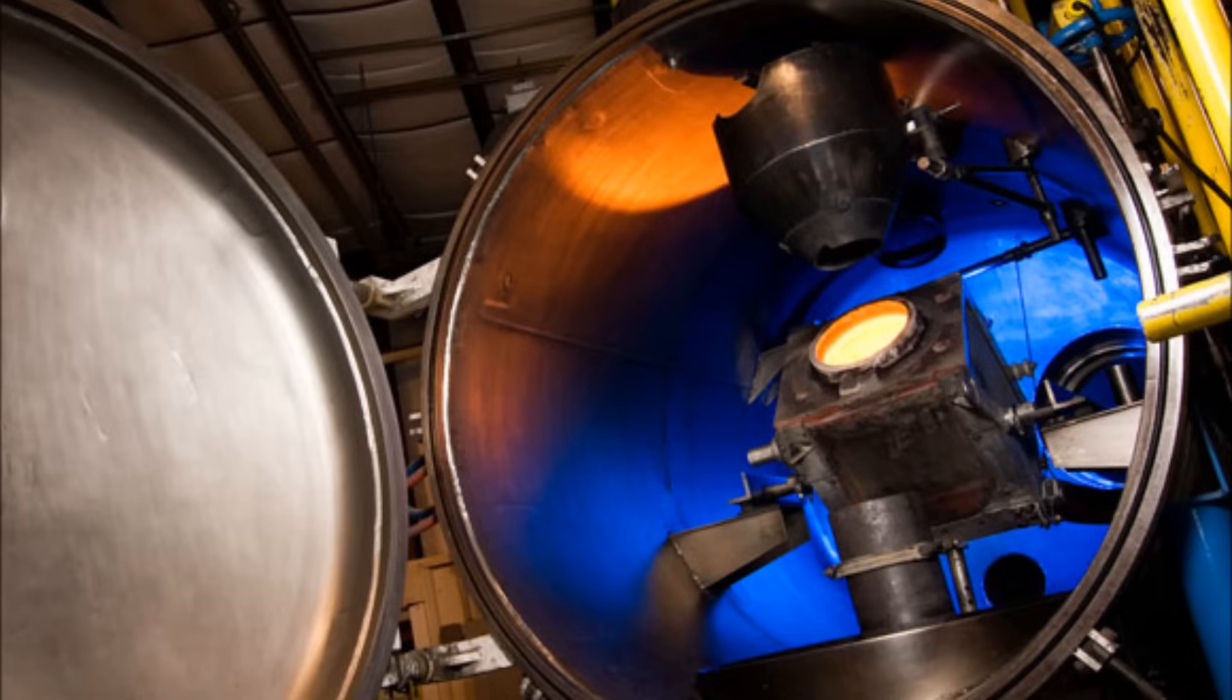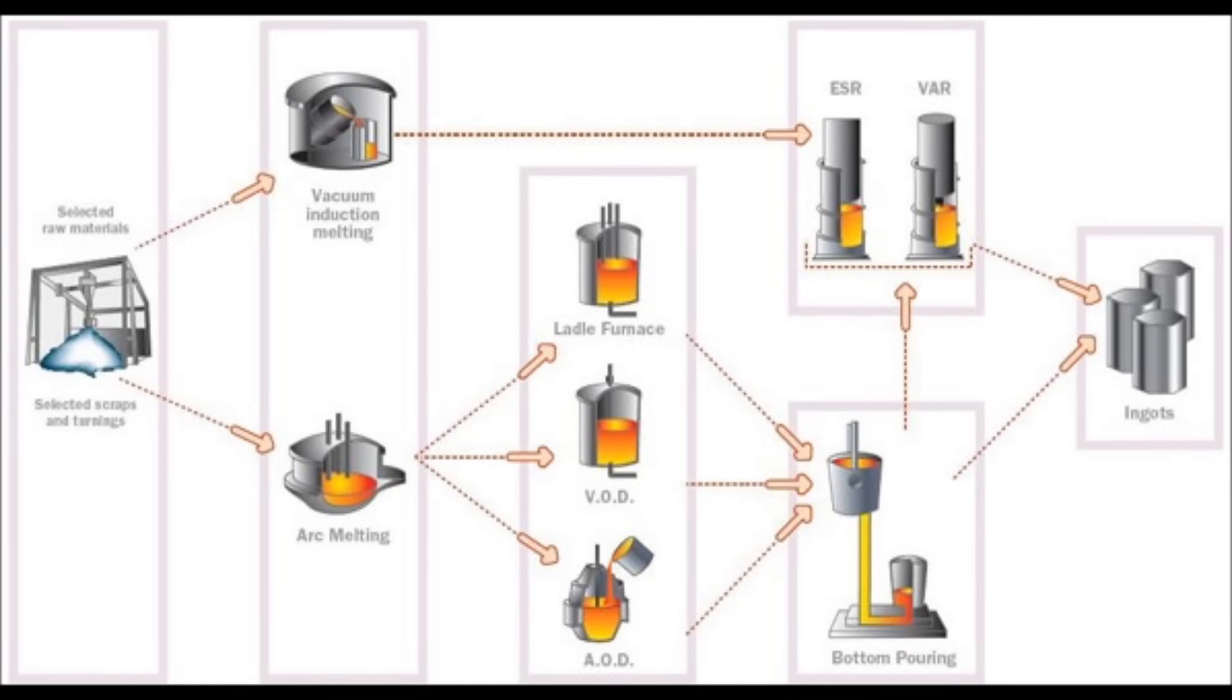Until, in 1958, vacuum arc remelting, or VAR, produced large forgings for disks, shafts, bolts, and structures, such as a turbine blade.